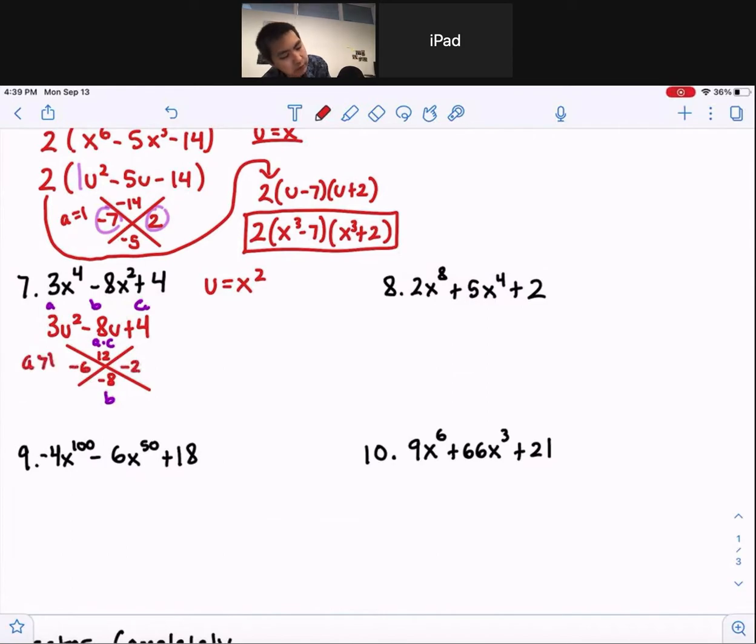Since a is greater than 1, you've got to factor this by grouping. So first term, 3u squared minus the 2. Remember, these two is the combination of that one: negative 6u minus 2u plus 4.